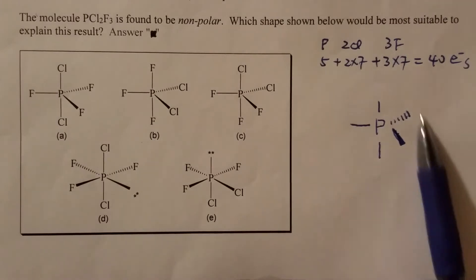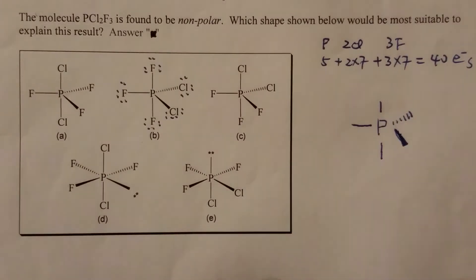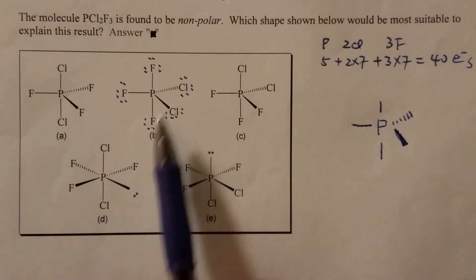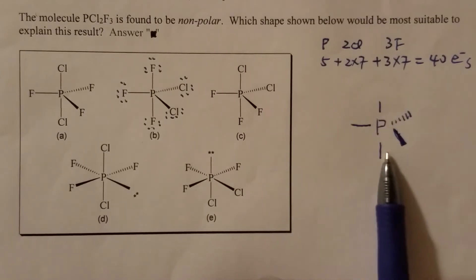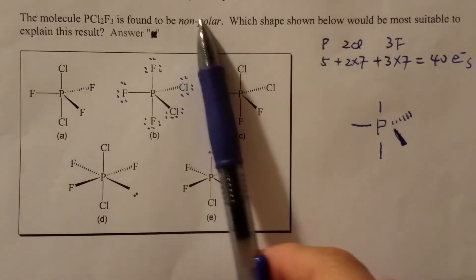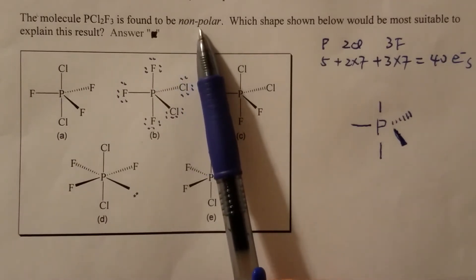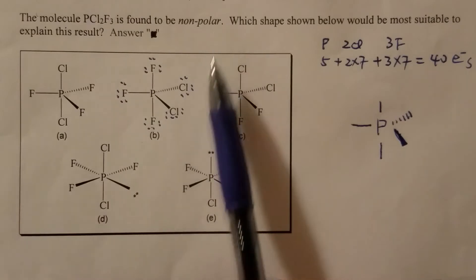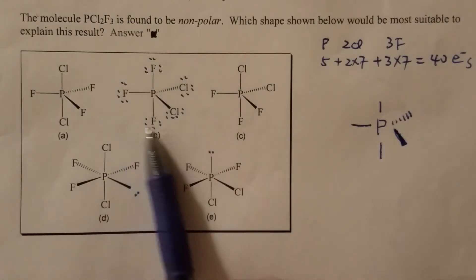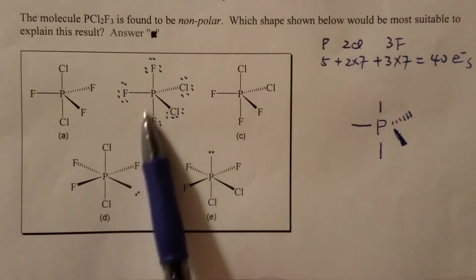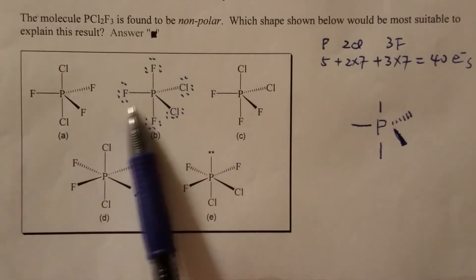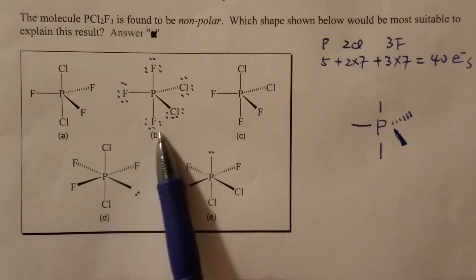So first, let's draw the skeleton structure. And now let's count the number of electrons assigned, because we really don't know the peripheral atoms arrangement yet to meet the condition here, the molecule be non-polar. So I just use one of those structures and assign the remaining electrons to the surrounding atoms, five of them, to meet the octet rule.